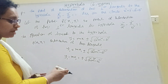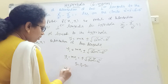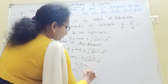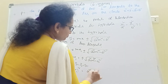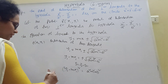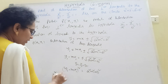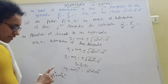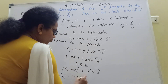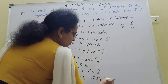Now there is a square root, so squaring on both sides. Then (y₁ minus mx₁)² equal to a²m² minus b². Now expand: y₁² plus m²x₁² minus 2mx₁y₁ equal to a²m² minus b². Now rearrange: m²x₁² minus a²m² minus 2mx₁y₁ plus b² plus y₁² equal to zero.